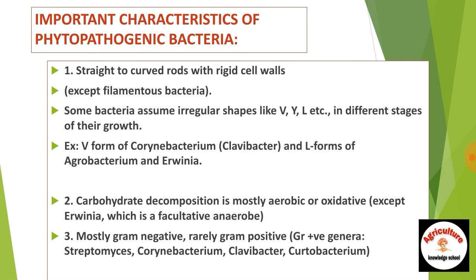Important characteristics of phytopathogenic bacteria: Number one — straight to curved rods with rigid cell walls, except filamentous bacteria. Some bacteria assume irregular shapes like V, Y, L in different stages of their growth. For example, V-form of Corynebacterium and Y, L-form of Agrobacterium and Erwinia. Number two — carbohydrate decomposition is mostly aerobic or oxidative, except Erwinia, which is facultative anaerobic.